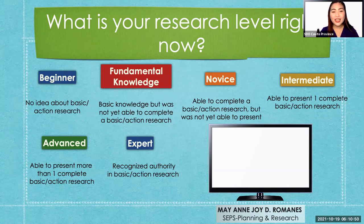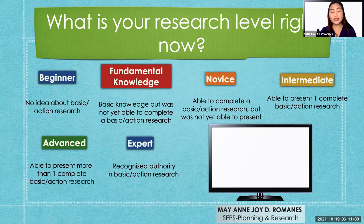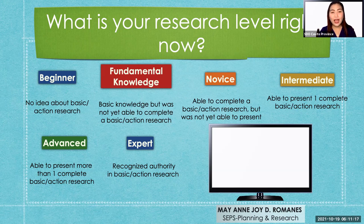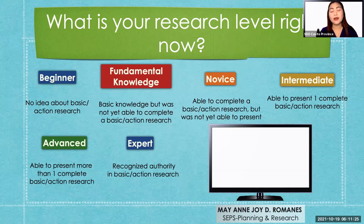First is beginner. Second is fundamental. Third is novice. Fourth is intermediate. Fifth is advanced. And sixth is expert. If you perceive that you're a beginner, it means you don't really have any idea about basic or action research — you don't know what RRL is, or what the introduction is, or even the parts of a basic or action research. If you're at this level, please type 1 in the chat box.